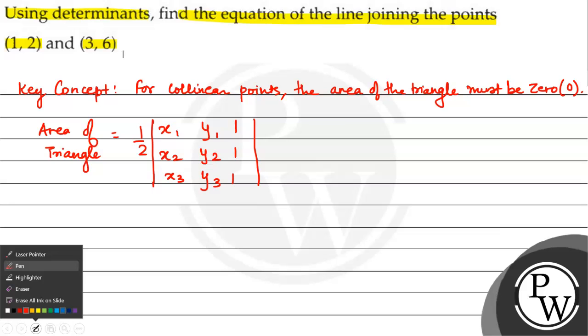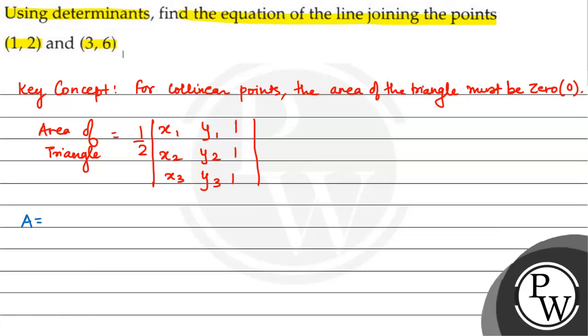Now, let us consider that my point A is (1, 2) and my point B is (3, 6). I have a third point, so let us take point C which is equal to (x, y). So now, my x1 is 1, y1 is 2, x2 is 3, y2 is 6, x3 is x and y3 is y.